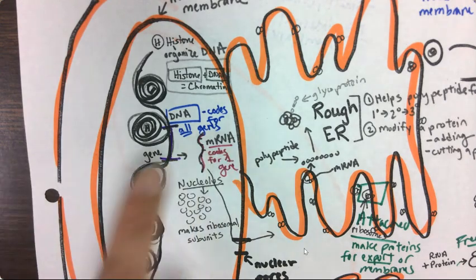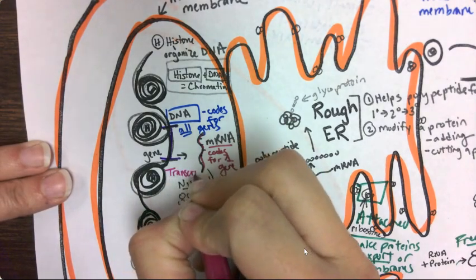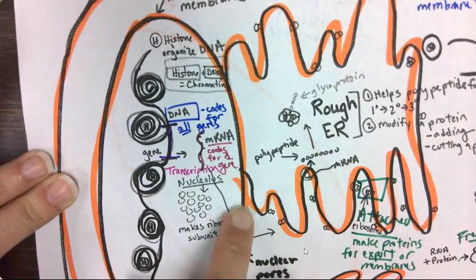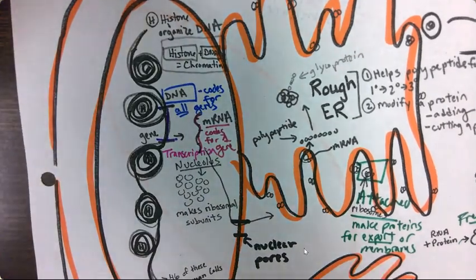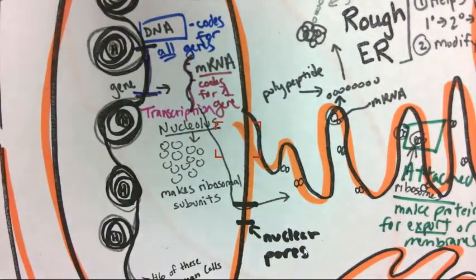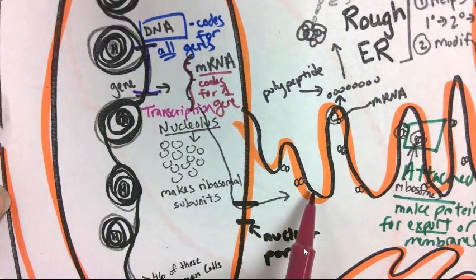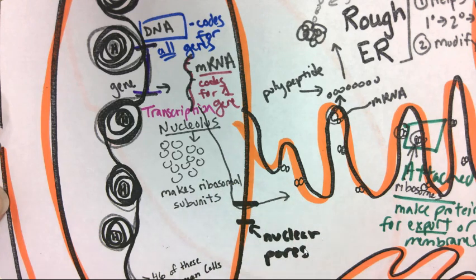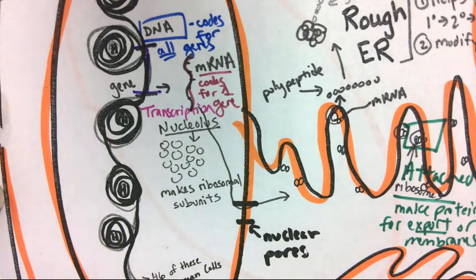mRNA codes for one gene. So all of a sudden, we're a little bit specialized instead of coding for, instead of making copies of all of the genes in the DNA, we're only going to make copies of the genes we need for this specific cell type. Again, this process of going from DNA to mRNA is called transcription. In the nucleolus, which is a region in the nucleus, parts of the ribosome are being made at the same time. So now what's going to happen is the mRNA is going to leave the nucleus through the nuclear pores. The parts of the ribosome are also going to leave the nucleus.